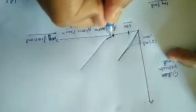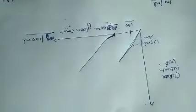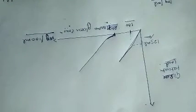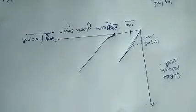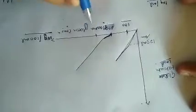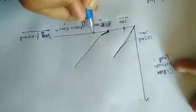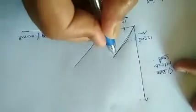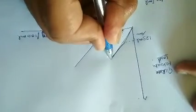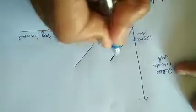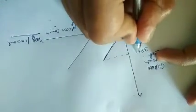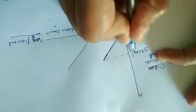The glucose appearing in urine at this point does not represent the transport maximum, because not every nephron has the same transport maximum. As plasma glucose concentration increases further, the filtration load continues to rise toward 375 mg per minute.